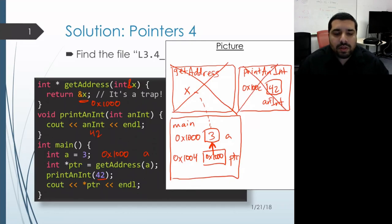And then we move on to the next line, which prints out the result of dereferencing PTR. Dereferencing PTR will follow the pointer to the address it's pointing at. And so we get to that A object, and we print out its value. And so that prints out three, and everything works correctly.